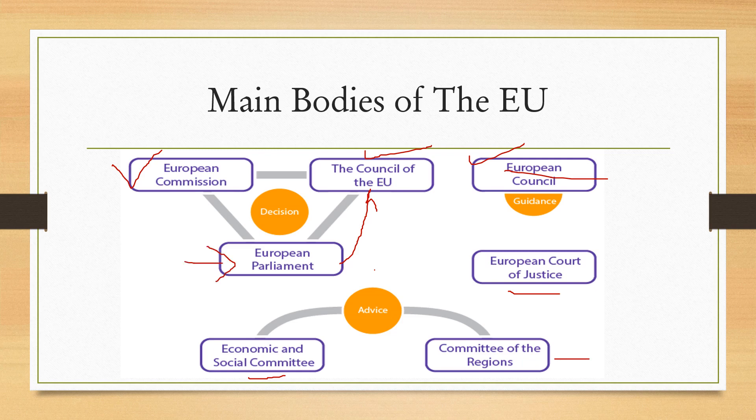The European Parliament members are directly elected by citizens of the European Union. Parliament acts as a co-legislator and decides the budget of the European Union. They amend legislative proposals and supervise the work of the Commission and other European Union bodies.